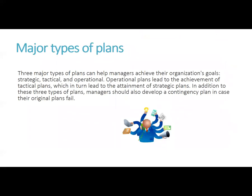Major types of plans — the three major types of plans can help managers achieve their organizational goals: strategic, tactical, and operational. Operational plans lead to achievement of tactical plans, which in turn leads to the attainment of strategic plans. In addition to these three types, managers should also develop a contingency plan in case their original plan fails.